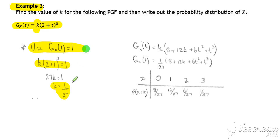Having found what our value for k is, we can now expand out our brackets and represent our probability generating function in a form more compatible with a probability distribution.